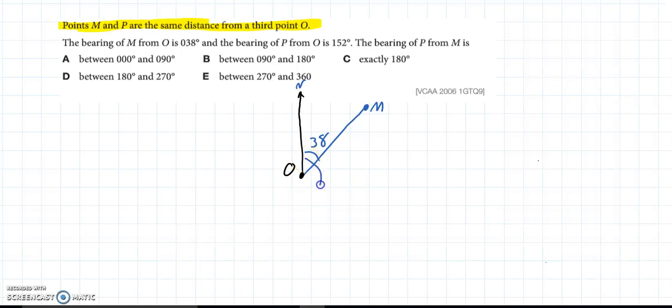Then the bearing of P from O is 152 degrees. So, if we go 152 around and head down. And we want this distance to be the same as this one. Because P is the same distance from O as M. And that there is 152. Then, the question is, the bearing of P from M is? So, the bearing of P from M, if we put the northing line in at M, is the angle around until we're looking at P.